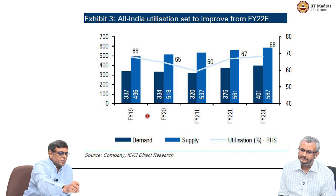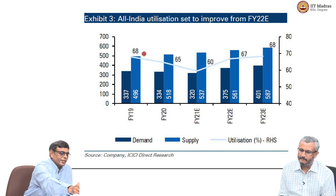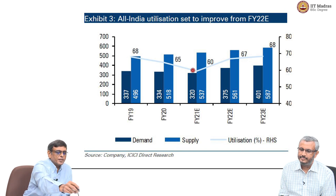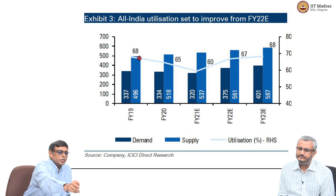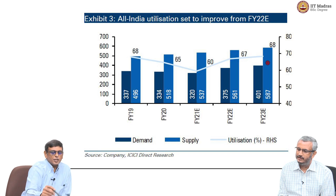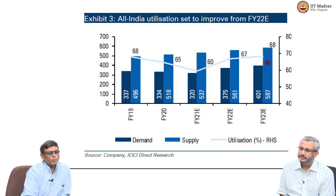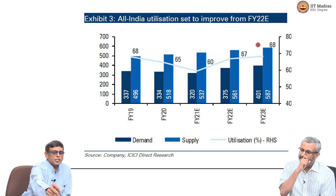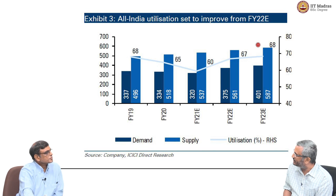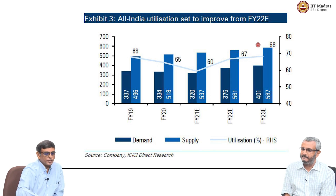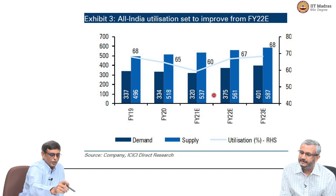Looking at the utilization picture — utilization basically is the ratio of demand to capacity or supply. We have 68 percent utilization in FY19, and it has come down because of the pandemic. It is expected to go back to the 68 percent level. So there is some improvement in utilization, but this number is still a little low — close to 70 percent of installed capacity has been utilized. There was a dip in FY21.